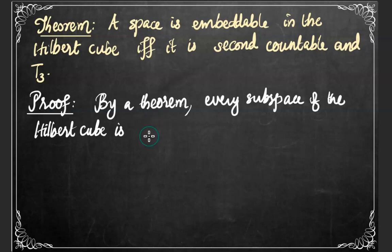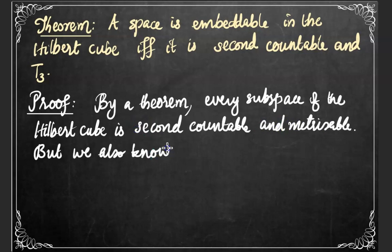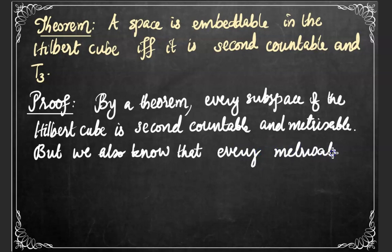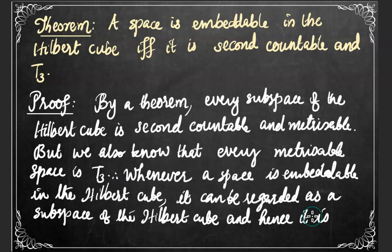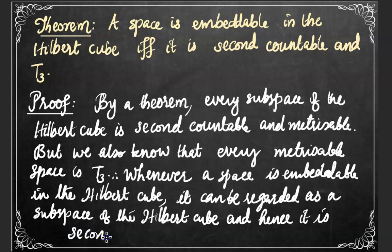By a previous theorem, we know that every subspace of the Hilbert cube is second countable and metrizable. But we also know that every metrizable space is T3 by another theorem. Combining these two results, we can say that whenever a space is embeddable in the Hilbert cube, it can be regarded as a subspace of the Hilbert cube. Hence, by applying these two theorems, we can conclude that the space will be second countable and T3. Thus we have proved the necessity of the condition.